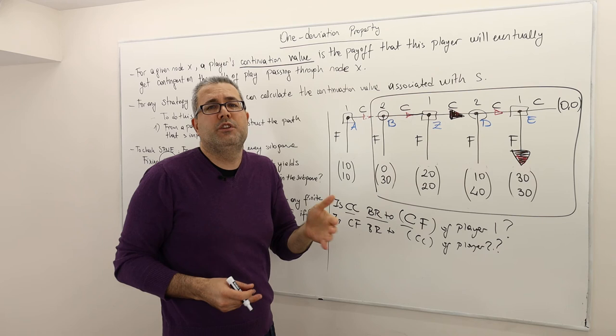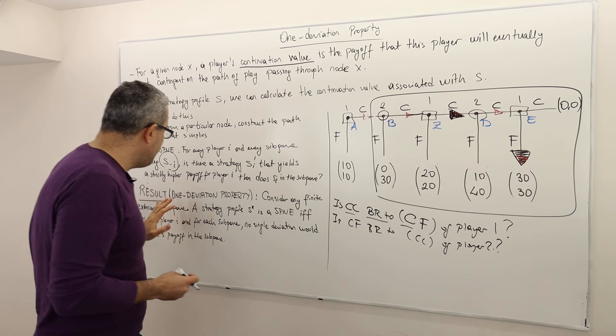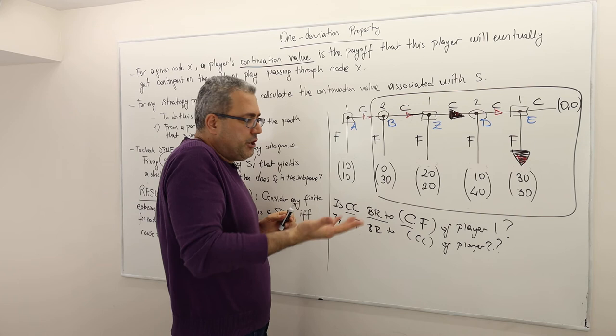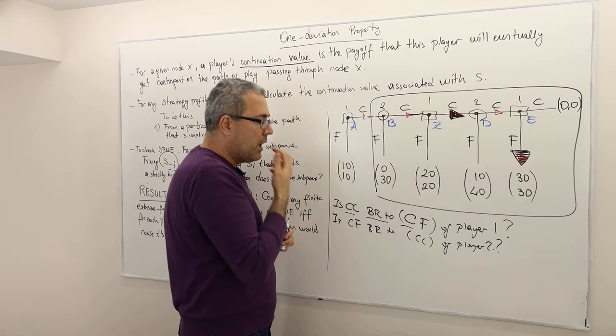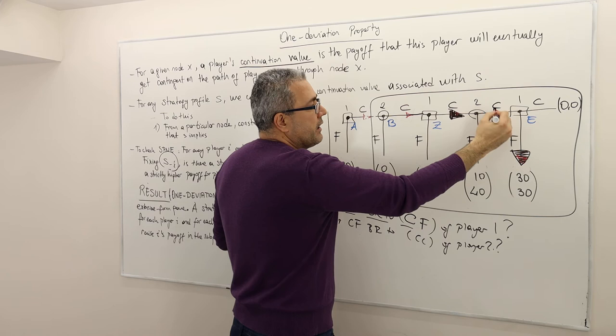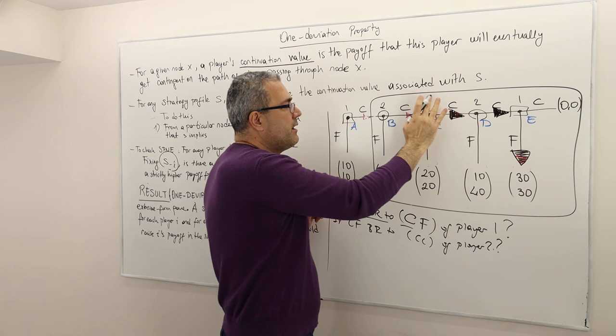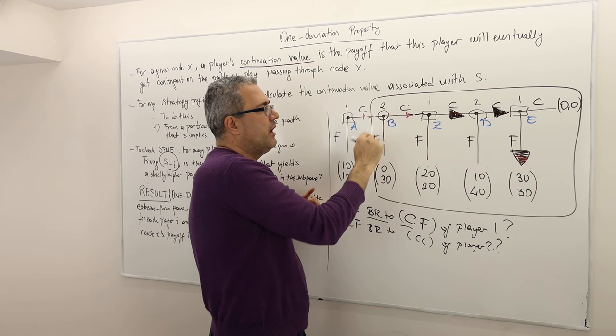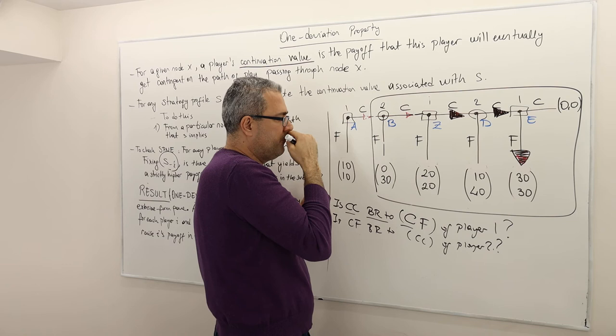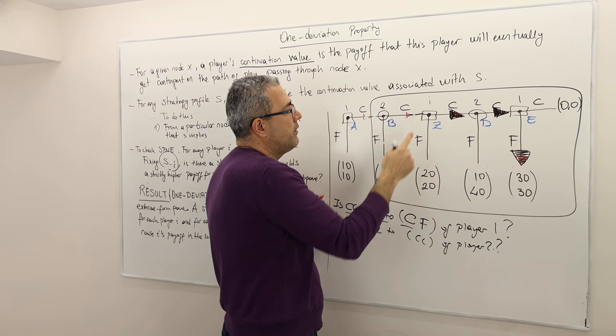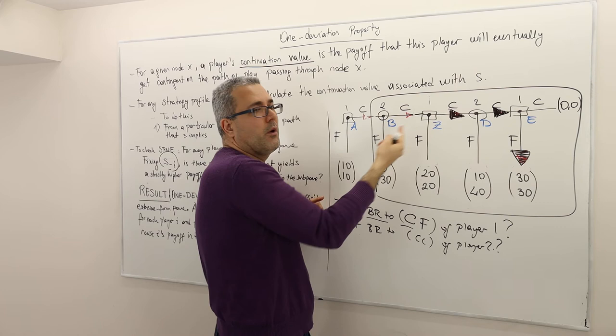Instead, the one deviation property says: fix your opponent's strategy and fix your continuation strategies — meaning your strategies for the rest of the game. Then only compare two possible choices at your current decision node: is C or F more profitable right now? If player two plays C she gets 30; if she plays F she also gets 30. So player two is actually best responding with C.